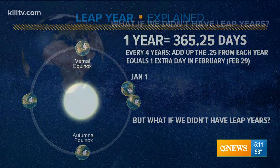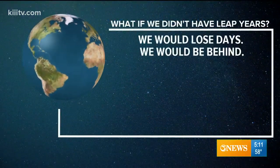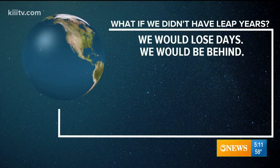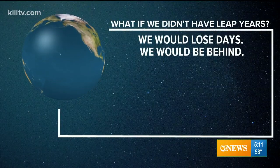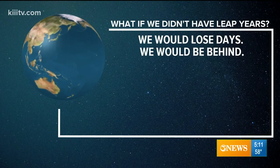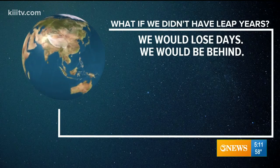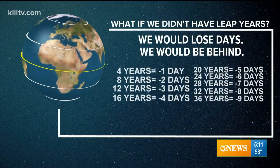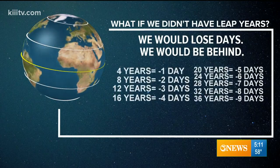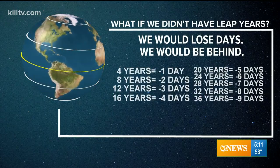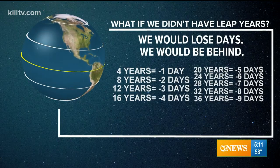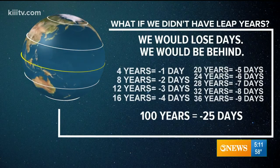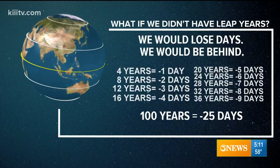So what would happen if we didn't have leap years? Something extraordinary. It all starts with the calendar. To sum it up, we would lose days — we would be behind because we wouldn't be adding that extra day in February, February 29th. So we would be behind every four years one day, every eight years two days, every 12 years three days, and so on until about 100 years — 25 days behind, so about a month. We'd be a month off.